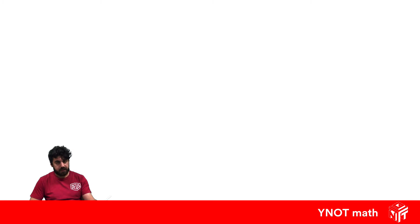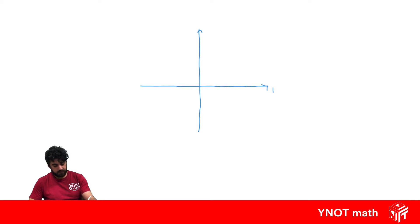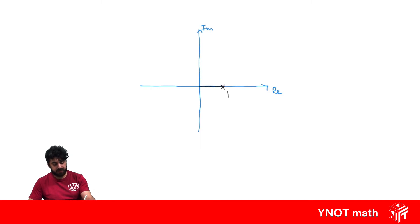Let's have another look at an interesting property with vectors. Drawing another Argand diagram with real and imaginary axes, let's draw a simple vector that goes from the origin to the point 1, and call this complex number z. So z has a real part of 1 and no imaginary part — essentially z equals 1.